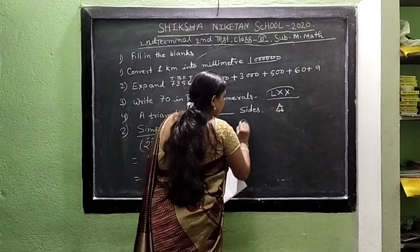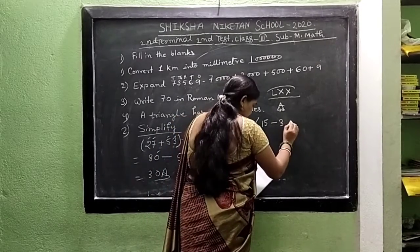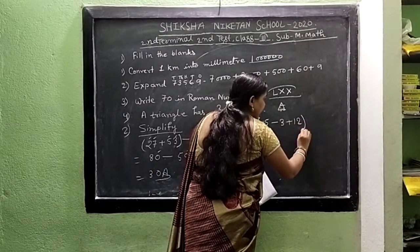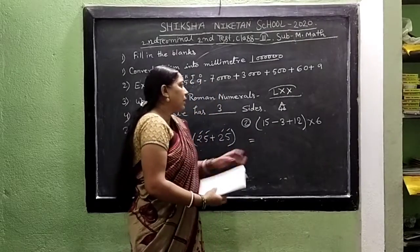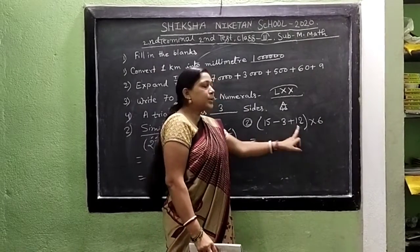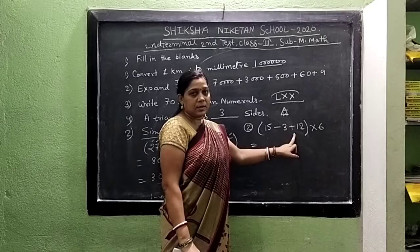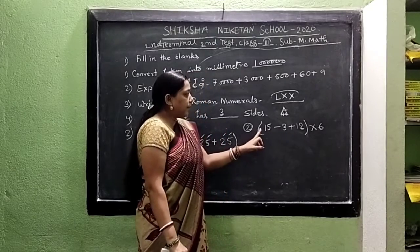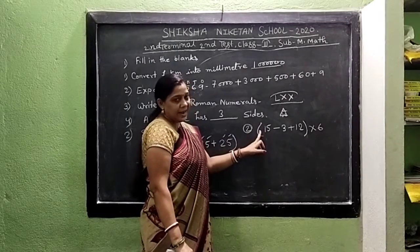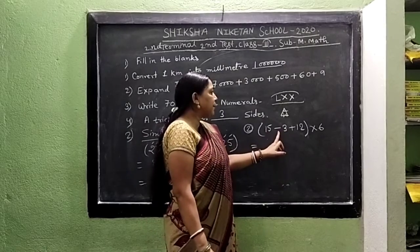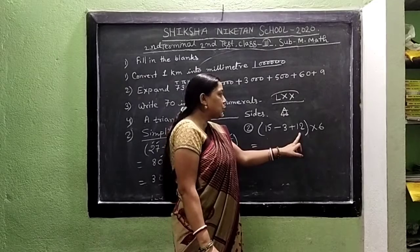Now we see one more simplify. The math is: 15 minus 3 plus 12, bracket close, multiply 6. In the brackets there are 2 symbols, minus and plus. First we solve the plus symbol. 15 is a plus number, 3 is before minus so it is a minus number, and 12 is before plus so it is a plus number.